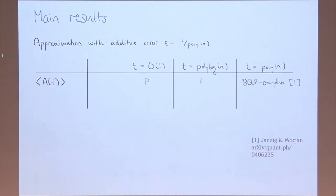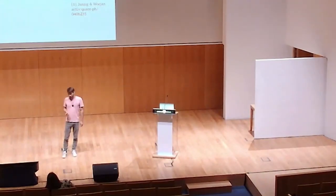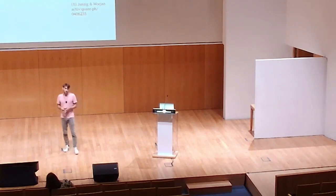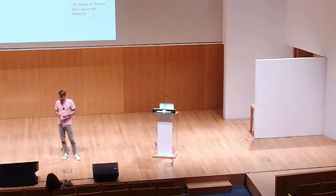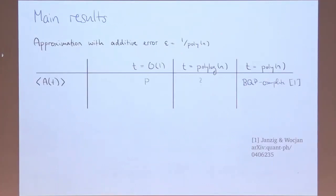Let me show you the results right away. We try to approximate these quantities classically to some additive error epsilon that scales with system size as one over a polynomial. What we find is that for any constant time, you can come up with a classical algorithm that does this in polynomial time. At long times — polynomial in system size — it is also known that this problem is BQP-complete, so we don't expect an efficient classical algorithm. There's a gap of poly-log n times where we currently don't know what happens.